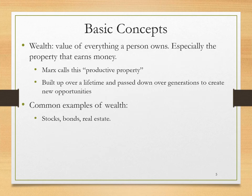Wealth is the value of everything a person owns. This includes, especially, property that earns money — Marx calls that productive property. Wealth is built up over a lifetime, and especially among the wealthy, it is passed down from one generation to the next to create certain opportunities. Common examples of wealth include stocks, bonds, and real estate — items that you own that will make you money. The most typical form of wealth in the United States is home ownership.